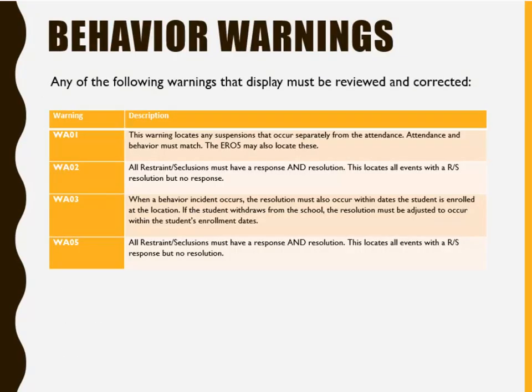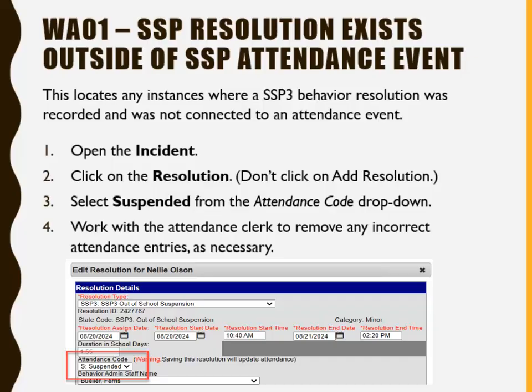Next, we will discuss the following behavior warnings. The first warning we'll discuss is Warning 1, SSP Resolution Exists Outside of SSP Attendance Event. This locates any instances where an SSP3 behavior resolution was recorded and was not connected to an attendance event. To correct it, open the incident, click on the resolution, don't click Add Resolution, and select Suspended from the Attendance Code dropdown. Work with the attendance clerk to remove any incorrect attendance entries as necessary. Be sure to always click Save, change the progress from In Progress to Complete, and then click Save again when completing a behavior incident.